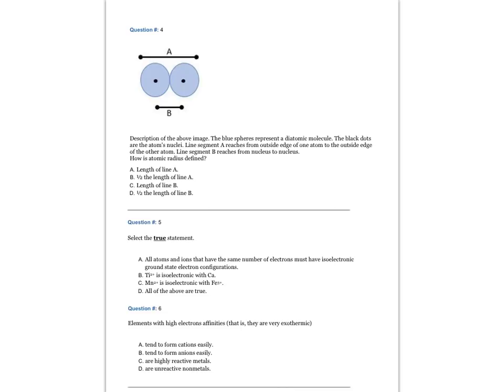Question number four: Description of the above image. The blue spheres represent a diatomic molecule, the black dots are the atom's nuclei. Line segment A reaches from outside edge of one atom to the outside edge of the other atom. Line segment B reaches from nucleus to nucleus.